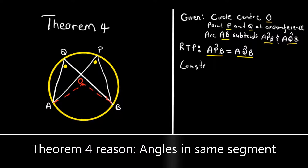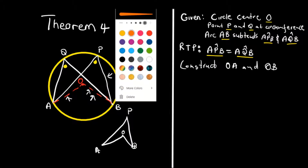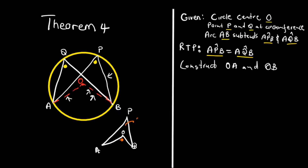The first thing we are going to do is construct OA and OB. Now this part here relates to Theorem 3 — where we have points A, O, B, and P — which states that the angle at the center is twice the angle at the circumference. There is also another application of Theorem 3 from Q at the circumference, giving the same relationship.